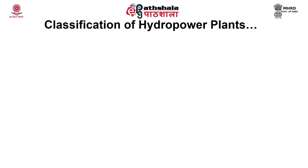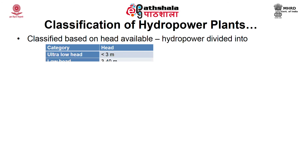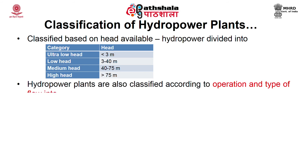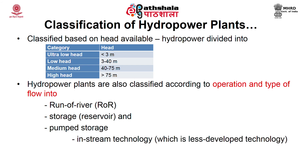Hydropower plants are also classified by available head: ultra-low head is below 3 meters, low head is 3–40 meters, medium head is 40–75 meters, and high head is above 75 meters. By operation and flow type, they are classified into run-of-river, storage or reservoir type, pumped storage, and in-stream technology, which is a newer category. These plants vary from very small to very large scale depending on hydrology and topography.